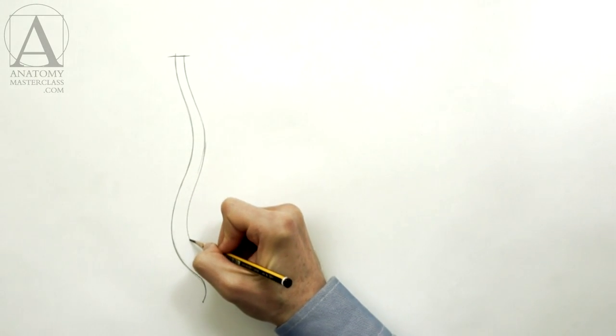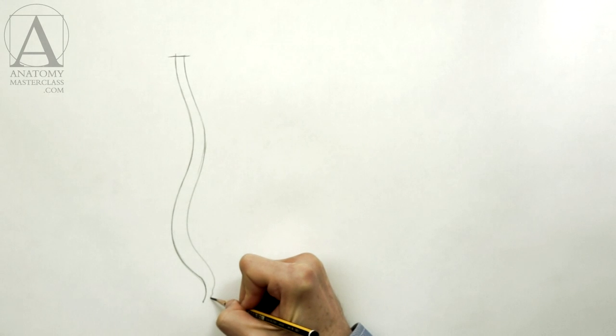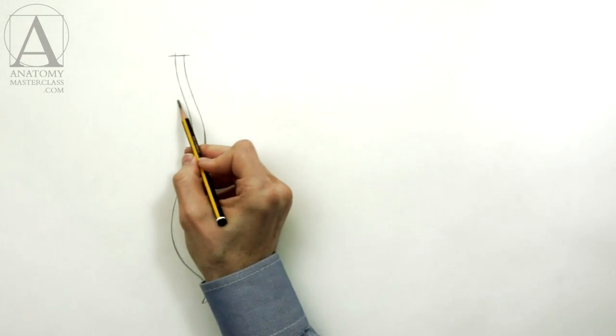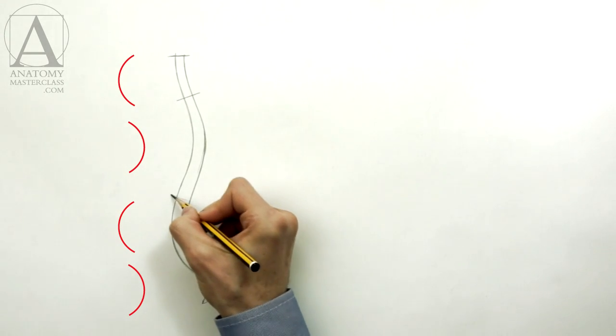The spine also grows thicker as it runs from the top to bottom. It can be divided into four parts. Each part has its own curvature.